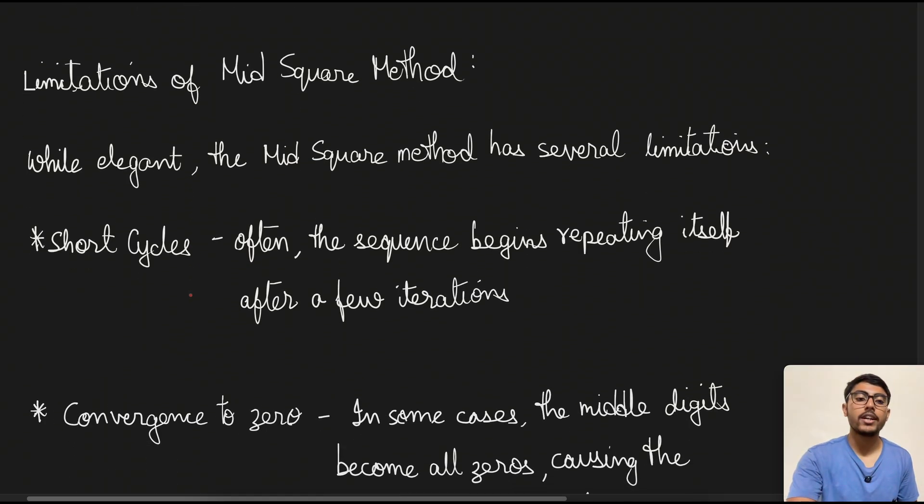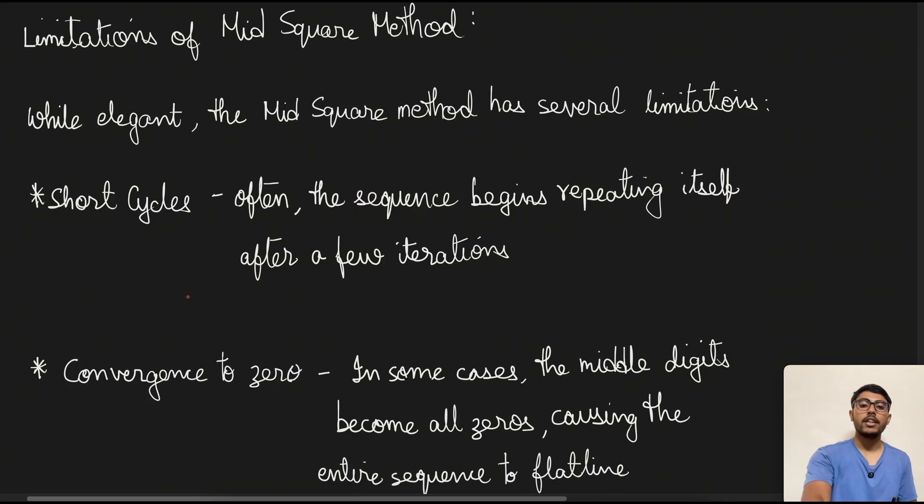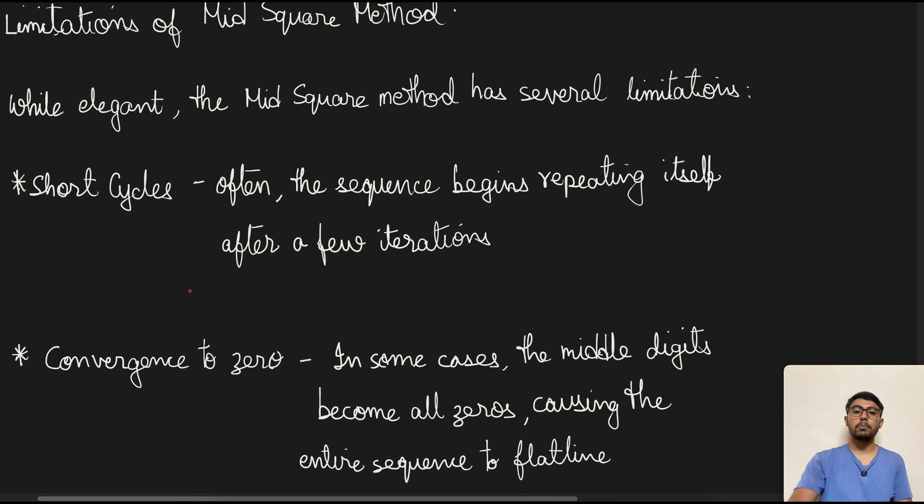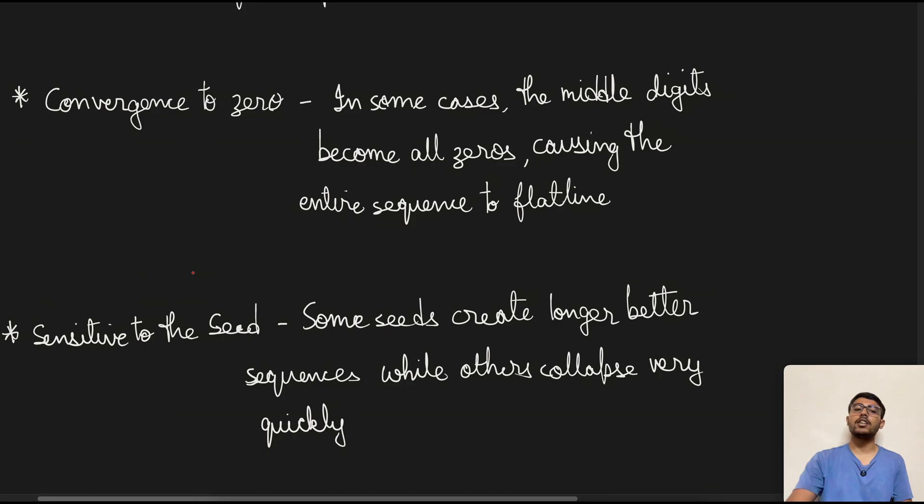The next point is convergence to 0. In some cases, the middle digits become all 0s, causing the entire sequence to go flat line out beyond that. So that is one another problem. The third limitation is the sensitivity to the seed. Some seeds create longer and better sequences while others collapse very often.